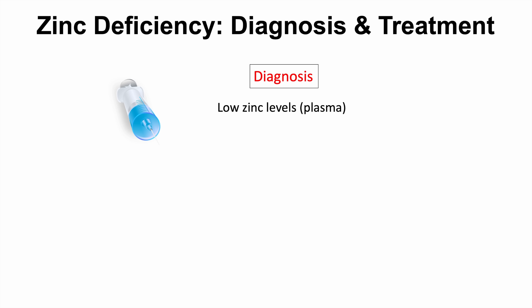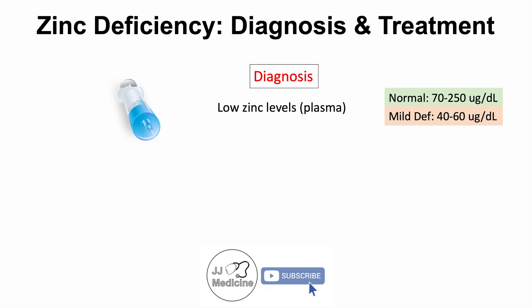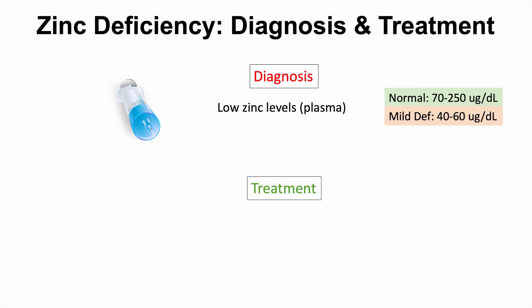Zinc deficiency is diagnosed by measuring plasma zinc levels. Normal levels are 70 to 250 micrograms per deciliter. Mild deficiency is indicated by levels of 40 to 60 micrograms per deciliter. Once diagnosed, treatment involves identifying the underlying cause and oral supplementation at 2 to 3 milligrams per kilogram per day to replete stores.